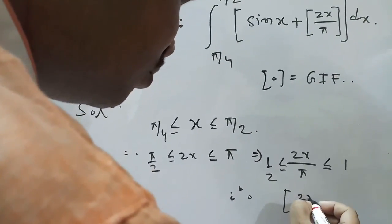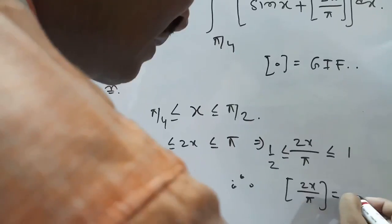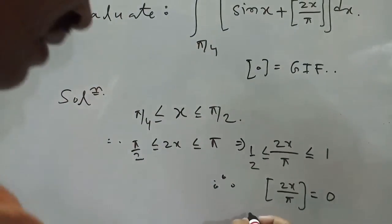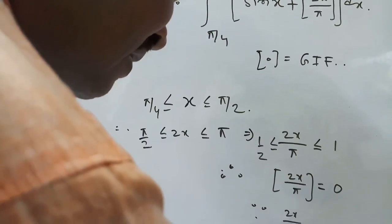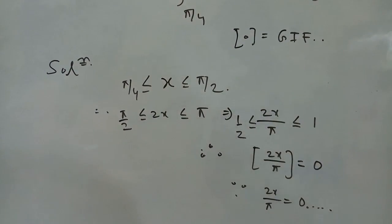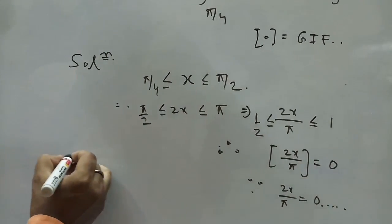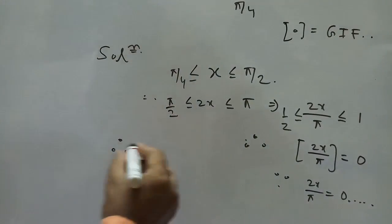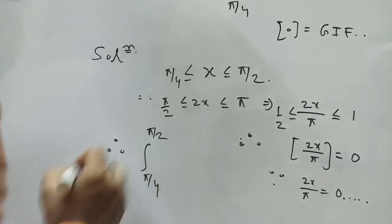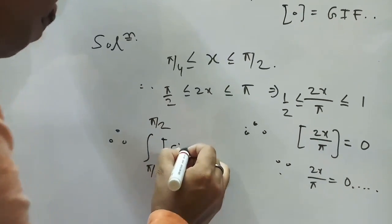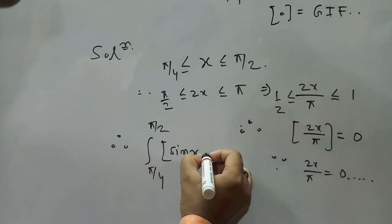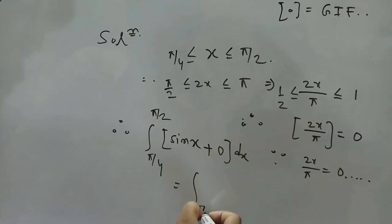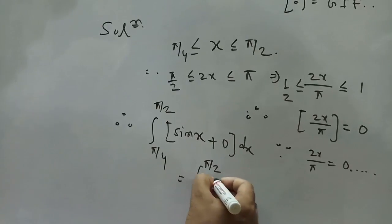Therefore Box[2x/π] = 0, because the value of 2x/π is between 0.5 and 1 — that is, zero-point-something. So the integral from π/4 to π/2 of Box[sin x + 0] dx becomes the integral from π/4 to π/2 of Box[sin x] dx.